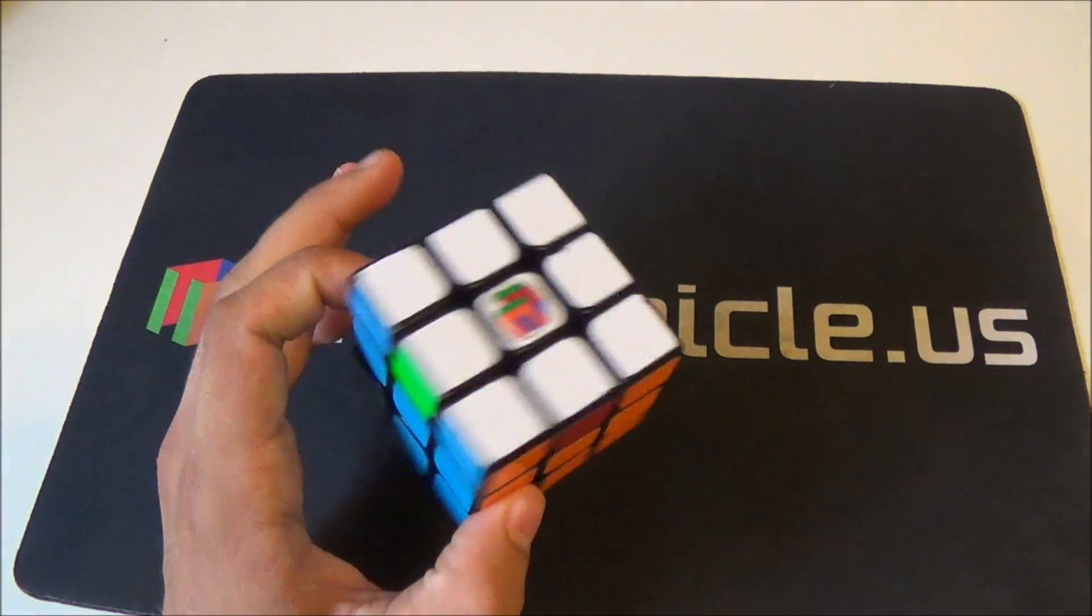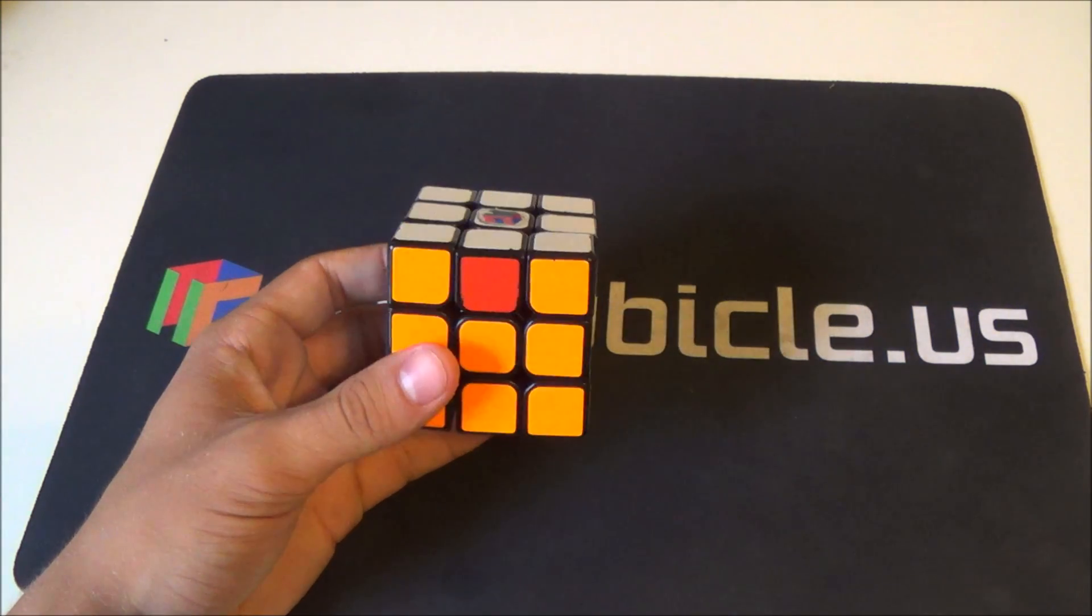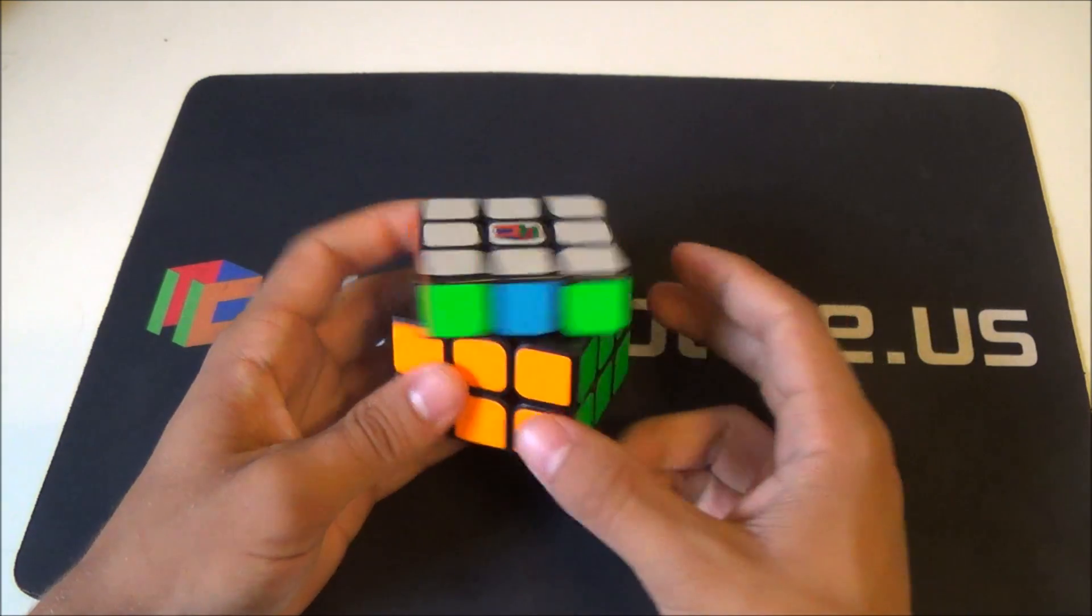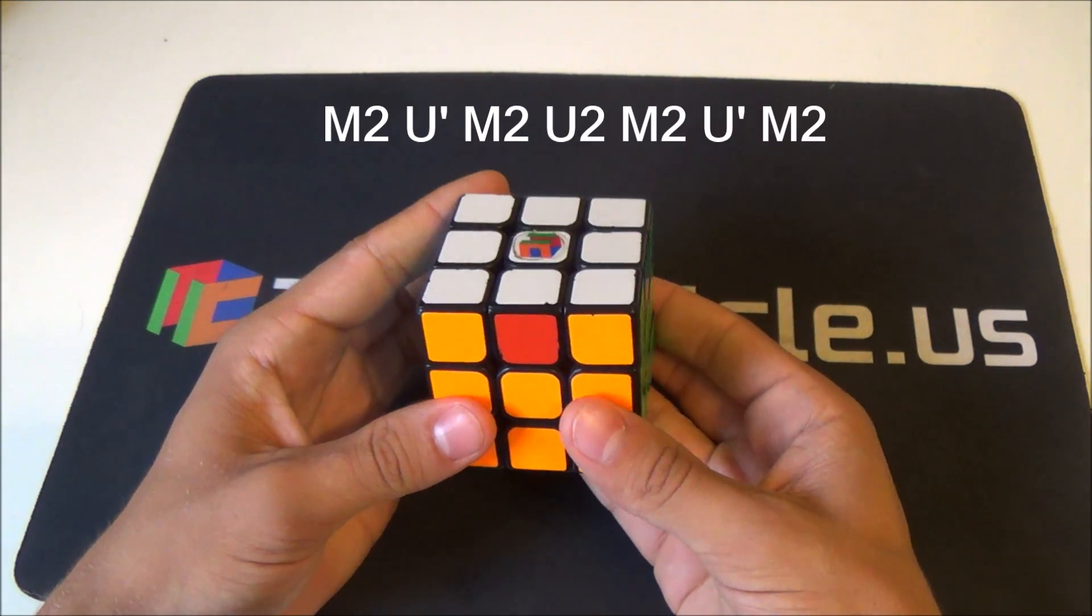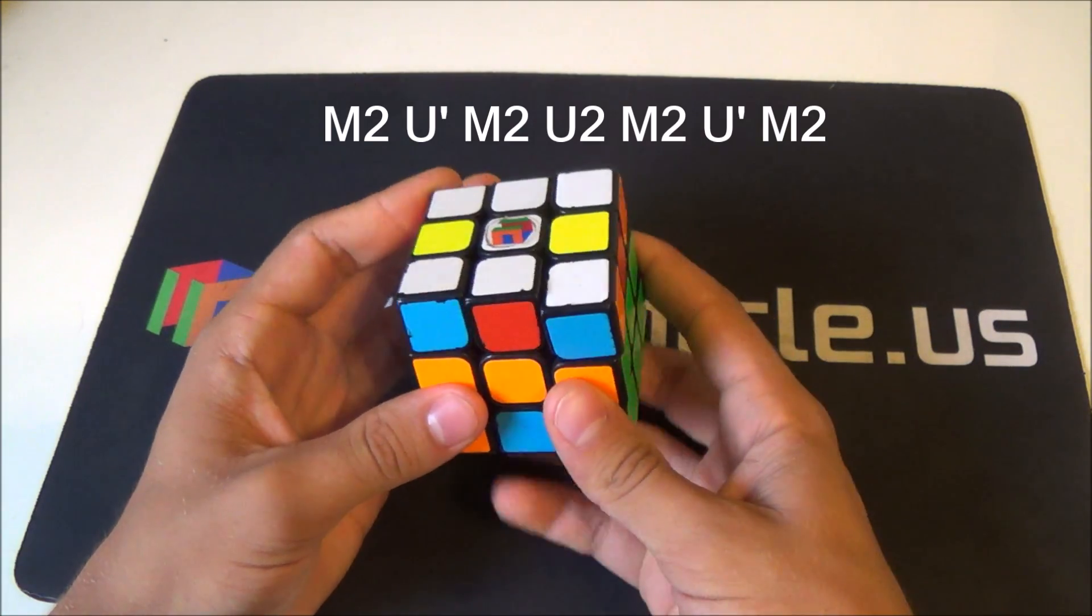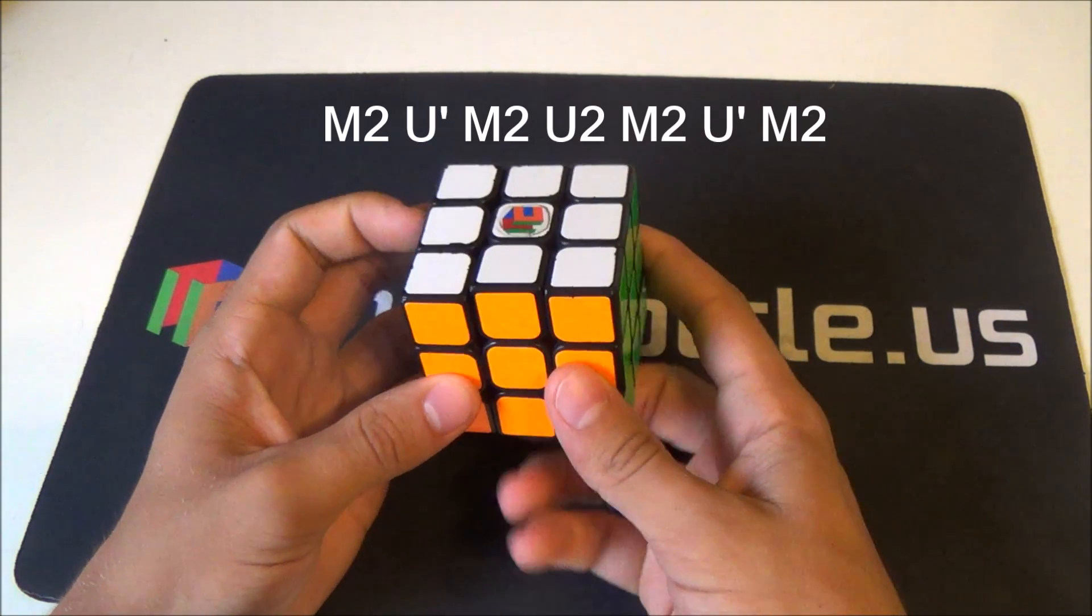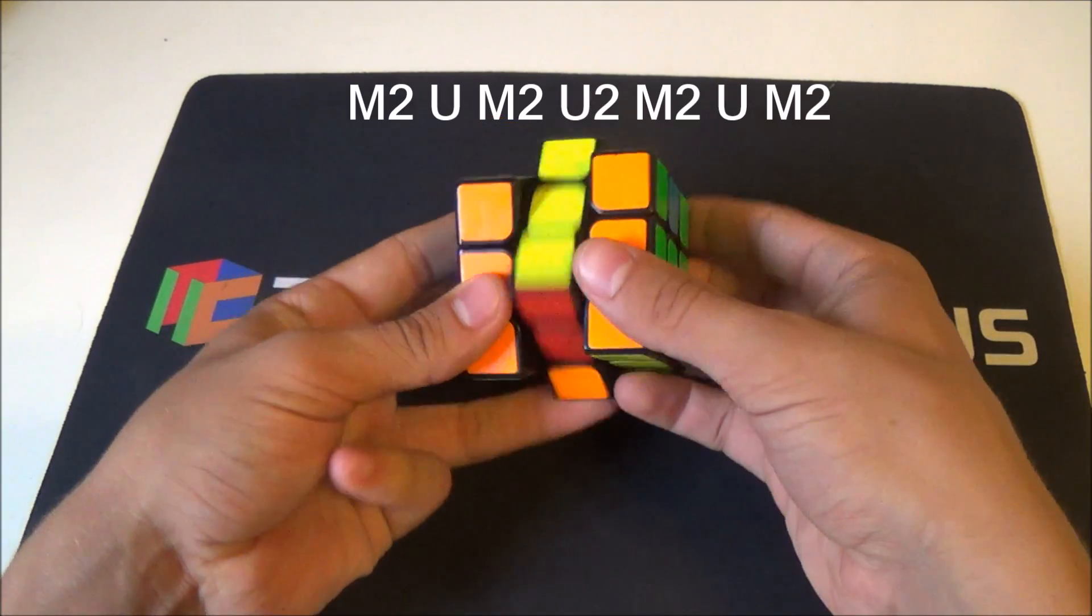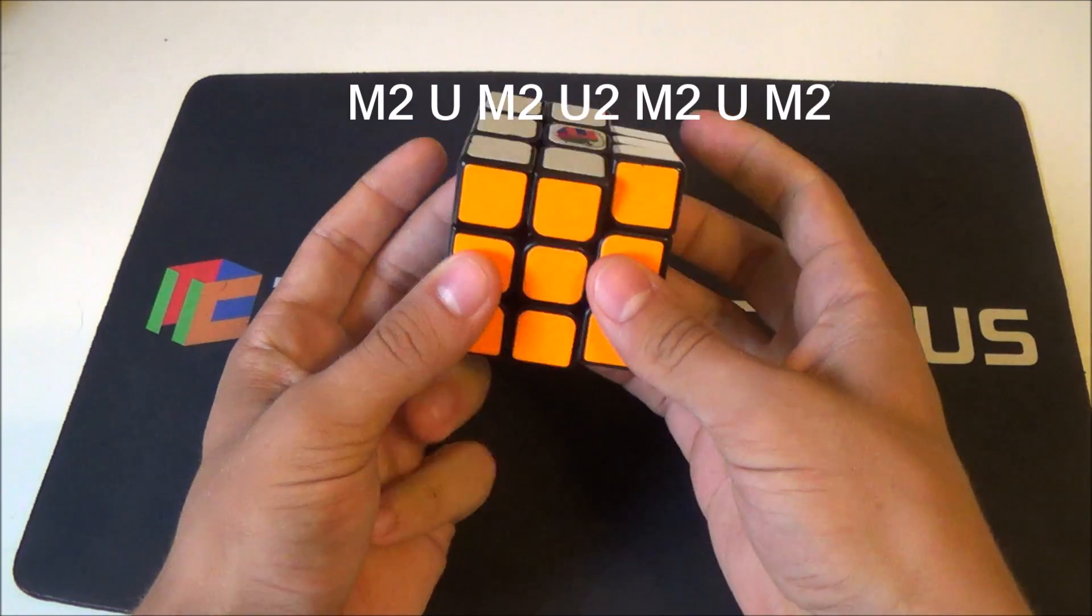Moving on to the H-perm. There's pretty much only one alg that's good for this, but you can mirror it, so you can do it with U moves or with U-primes. Or you can do it with U moves if you're using left-handed M2s.